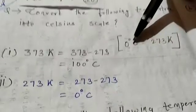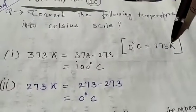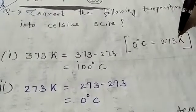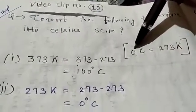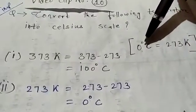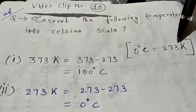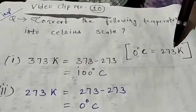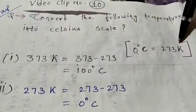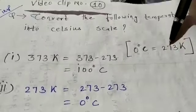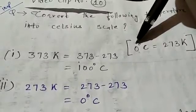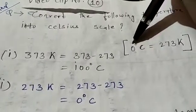If you have to convert degree Celsius to Kelvin, you will add 273. And if you have to convert Kelvin to degree Celsius, you will take the difference — minus 273.